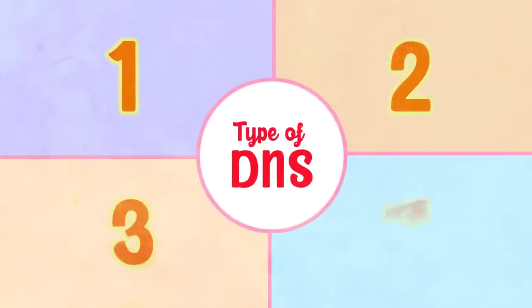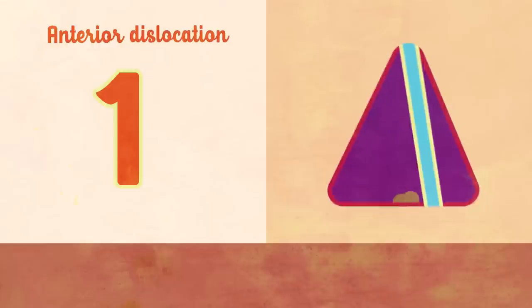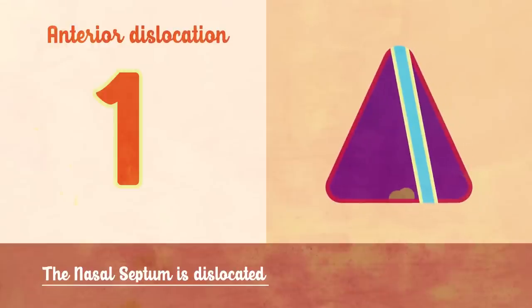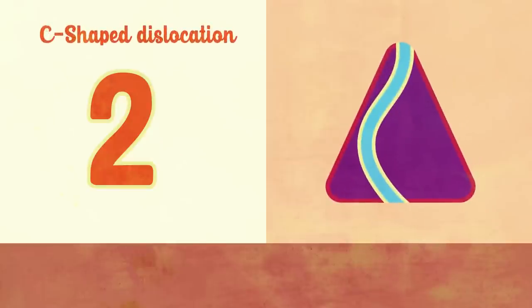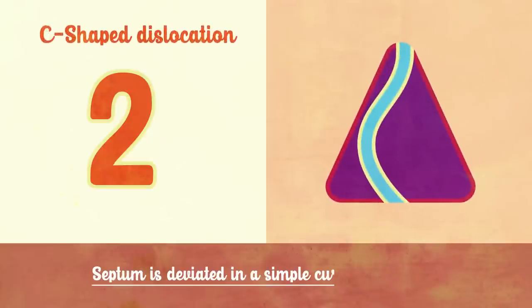Types of DNS. The first type is anterior dislocation, where the nasal septum is dislocated into one of the nasal chambers. The second type is C-shaped dislocation, where the septum is deviated in a simple curve to one side.